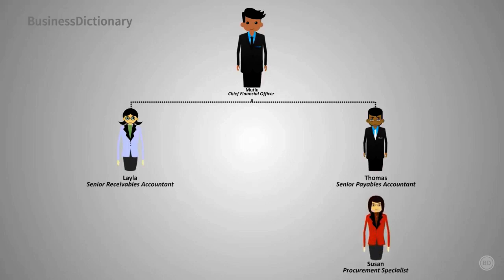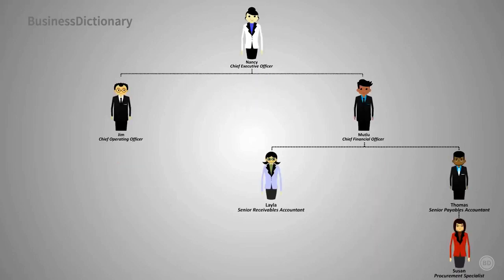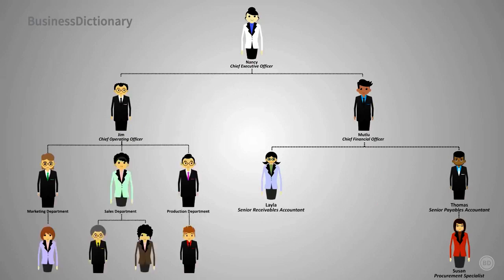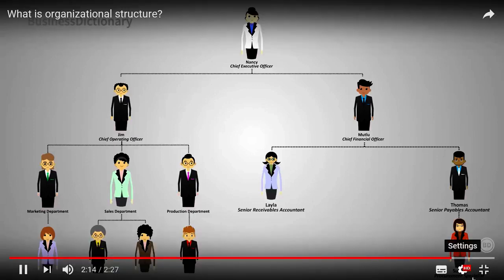Susan is a procurement specialist. She works with the company's suppliers and vendors to make sure the company always has sufficient resources and that service contracts are up to date. She frequently scouts new vendors so Awesome Corp gets the best prices. Thomas is her manager. Together, all these employees form Awesome Corp. Decision-making power flows from the top to the bottom, with a greater concentration at the top. For practice, try sketching out an organizational structure of your own company or college.